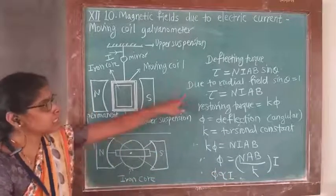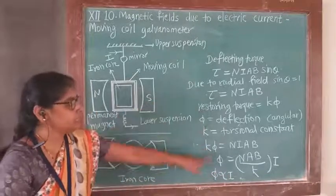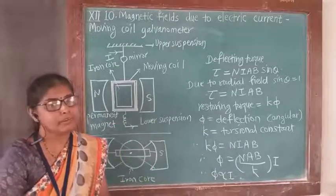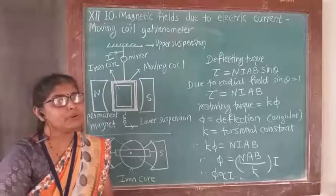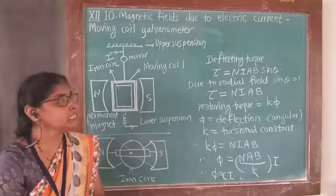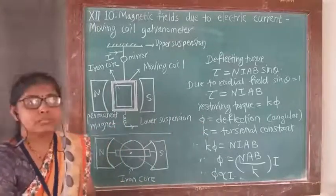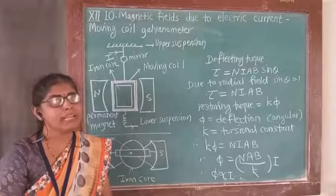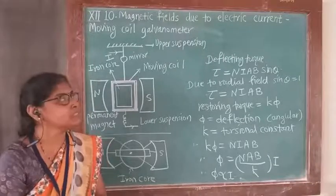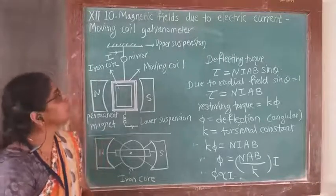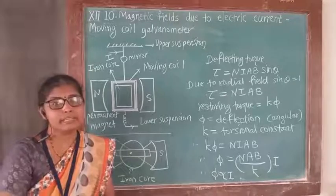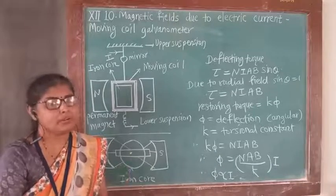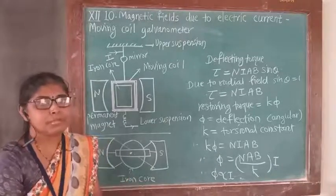This is the theory and construction of the moving coil galvanometer. In modern technology we use digital voltmeters and ammeters, which is why the moving coil galvanometer is not used in modern technology.